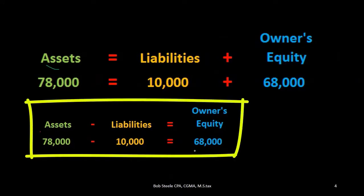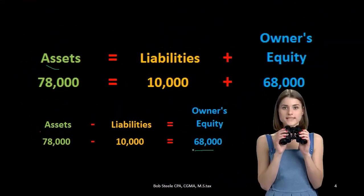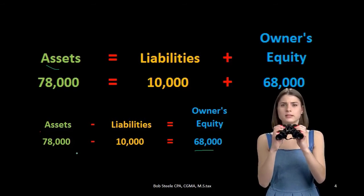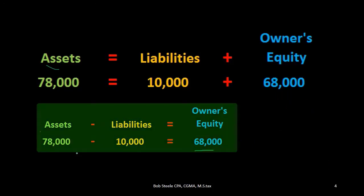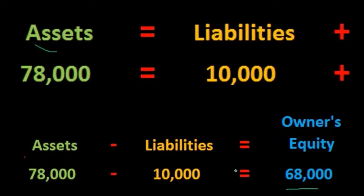This rearranged form emphasizes that the equity section represents the book value of the company — total assets minus total liabilities, also called net assets. In theory, if we sold all assets for $78,000 and paid off the $10,000 in liabilities, the remaining $68,000 would be owed to the owners. This format — assets equals liabilities plus equity — is what we use in financial accounting.